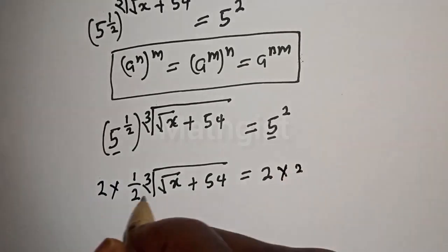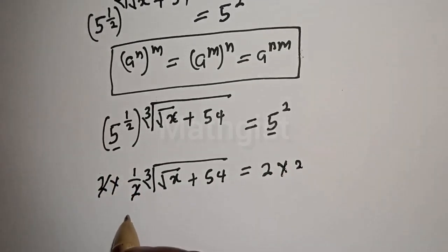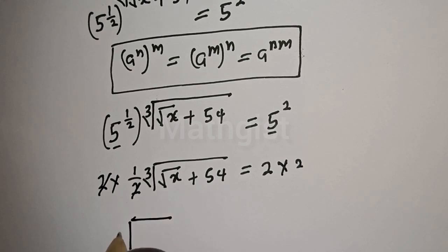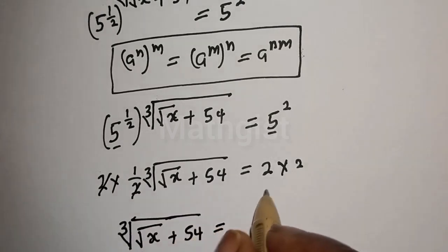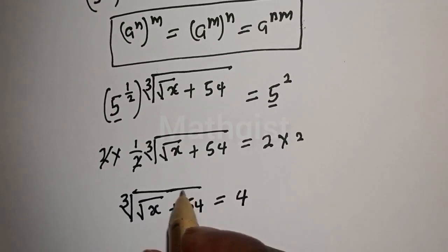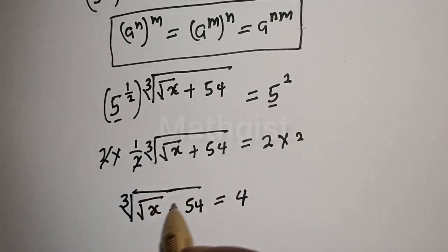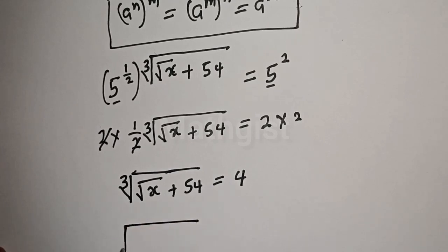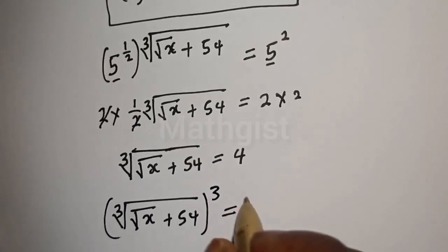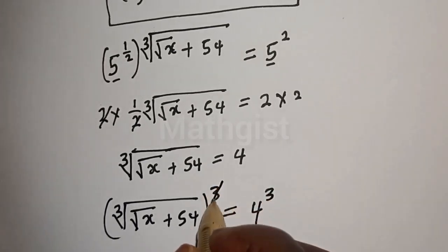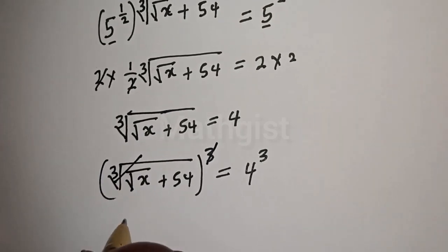Let's multiply both sides by two — multiply by two. This will cancel the one over two, and we are left with cube root of square root of s plus 54 equals four. Now raise both sides to the power of three to cancel the cube root, giving us square root of s plus 54 equals four cubed, which is 64.